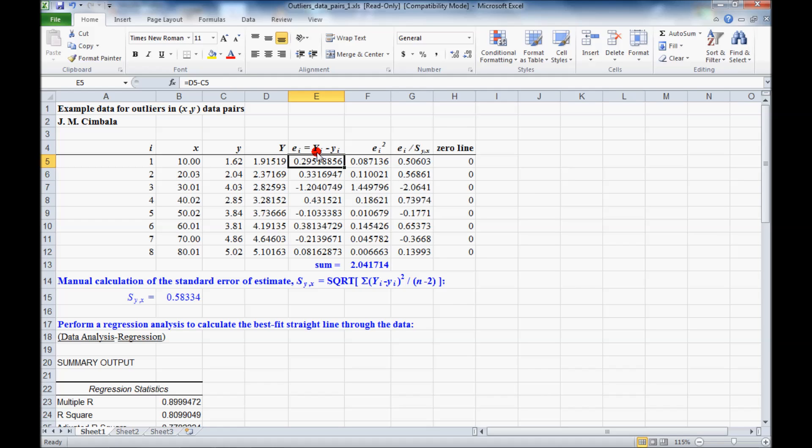Then I calculated the residual, which is equal to the value of the curve fit minus the value of the measurement. And then I also calculated E_i squared and then E_i over S. Now S_Y,X is defined as the standard error of estimate. It's given by this formula, which I actually calculated by summing all the E_i squareds, which are just Y minus Y_i squared, sum of those divided by N over 2. So you can see that formula here.